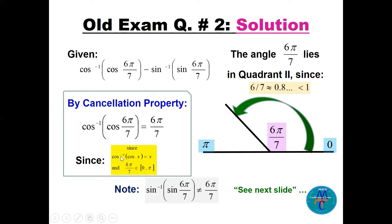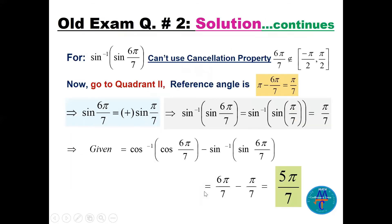For the sine inverse part, we cannot use the cancellation property because 6π/7 does not belong to the range of sine inverse, which is [−π/2, π/2].